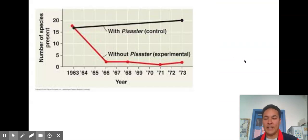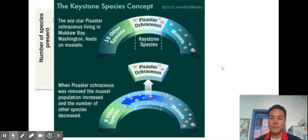Here's a graph showing the data. With the starfish around, you have 20 different species in that tidal pool. You remove it and it's down to below five.